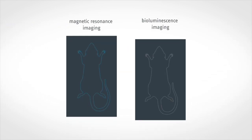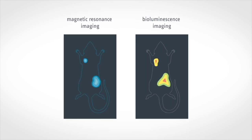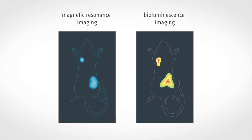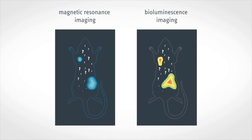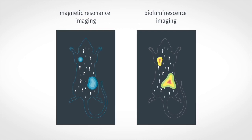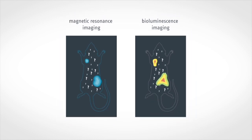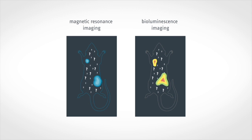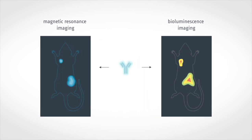For example, magnetic resonance imaging and bioluminescence imaging can detect large tumors but fail to detect hundreds of smaller metastases that can also be lethal. Crucially, these methods cannot evaluate whether a drug candidate actually reaches all small metastases.